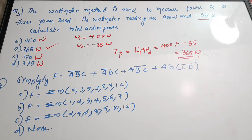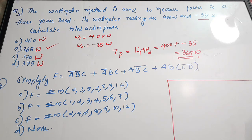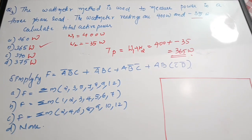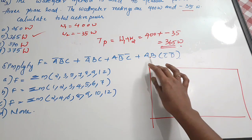The next question is from digital electronics — a simplification type. Simplify f = Ā B̄ C + Ā B D + A B̄ C̄ + A B C̄ D̄. You can apply De Morgan's law, Boolean laws, or K-map simplification. I am opting for K-map simplification. There are four variables — A, B, C, D — so it is a four-variable K-map.